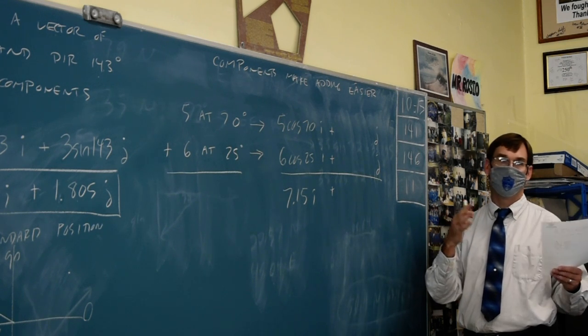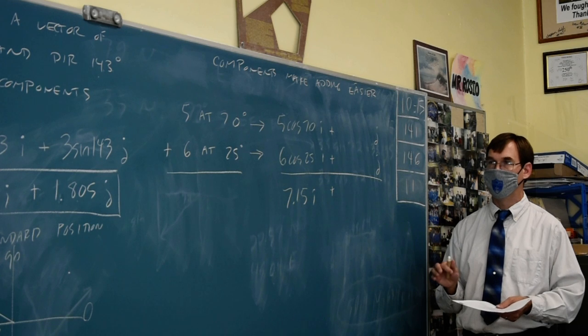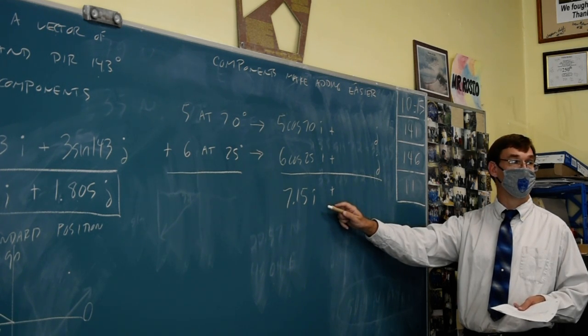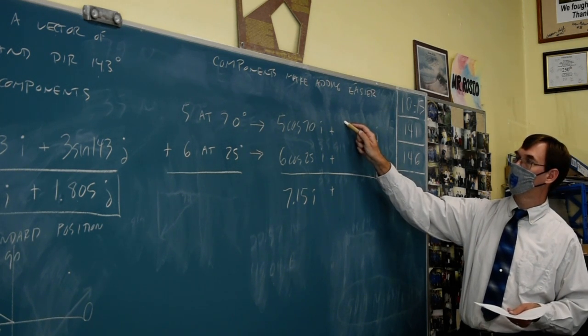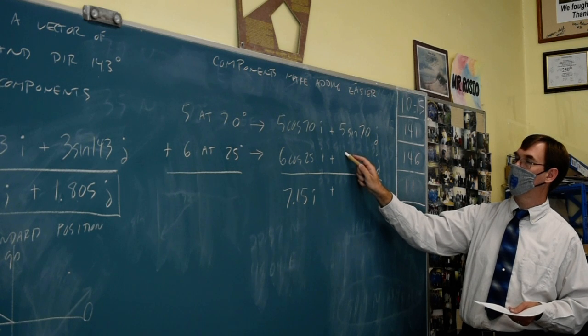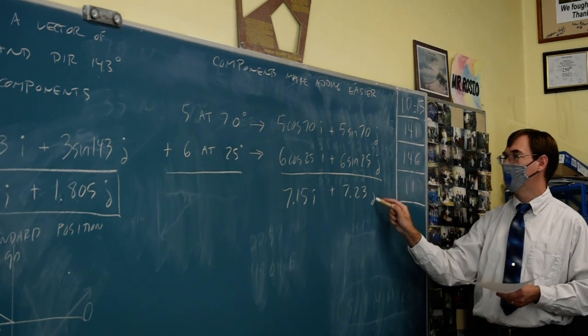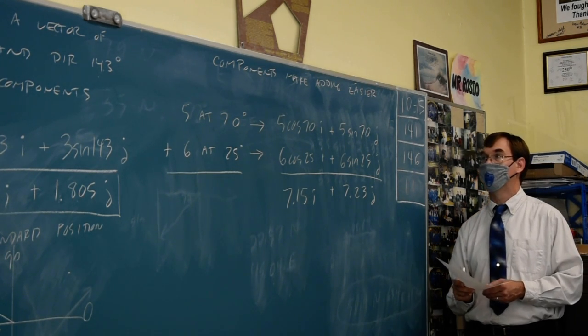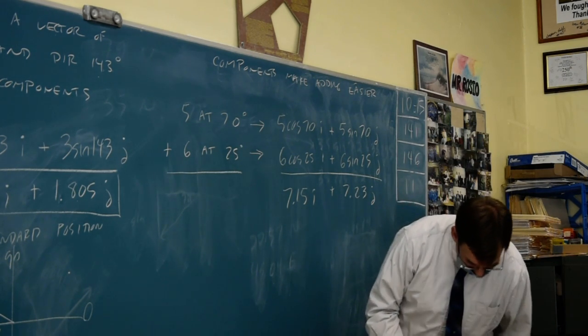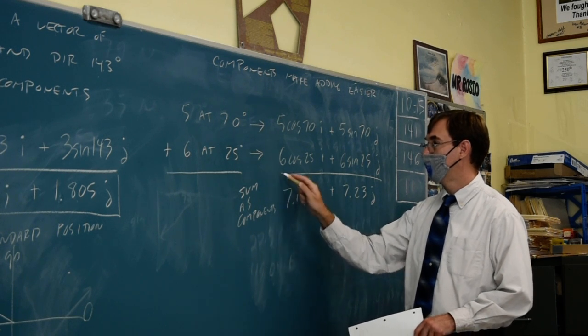In physics, we were having to draw pictures to figure out which component was which, sine and cosine. There was no standard way to do it. We just had to draw it every time. In here, cosine is always going to be the i. Sine will always be the j. There's no broader choice involved. J world, 5 sin 70 plus 6 sin 25. I'm hoping for a 7.23 j. Those are usually not that similar to each other. Sometimes they're about the same. Sometimes some of them are negative. If they ask you to find the sum as components, we're done. That's the sum as components.